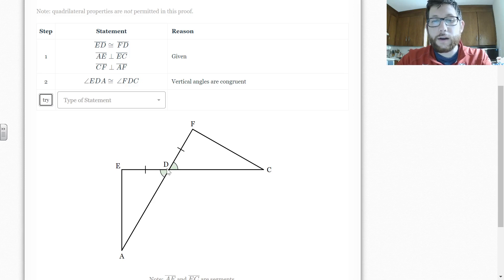And once you, if you get it right, it'll show up. If you get it wrong, it will tell you why that's not the correct reason for your proof. Now, notice here I do have some perpendicular lines. Now, let me just kind of show you how they do perpendicular lines so you're not confused.